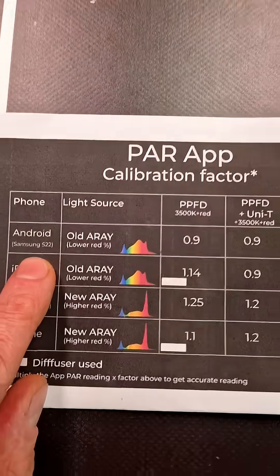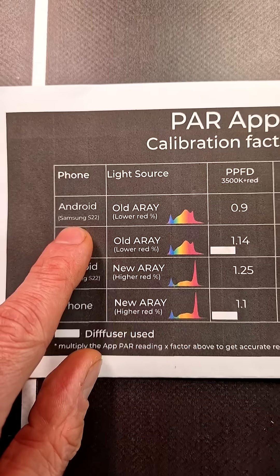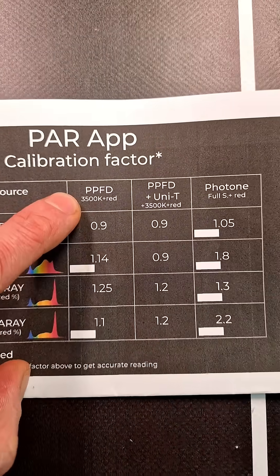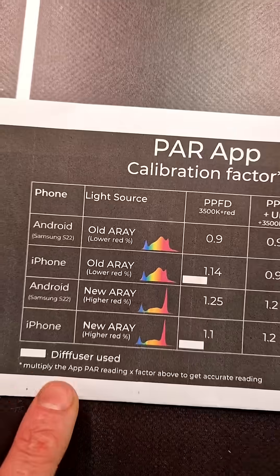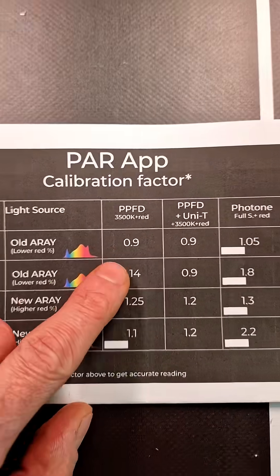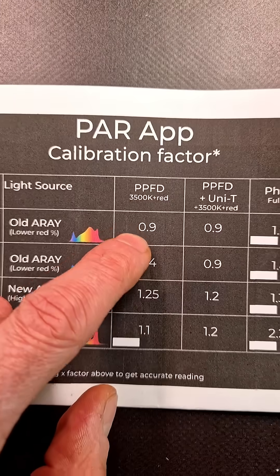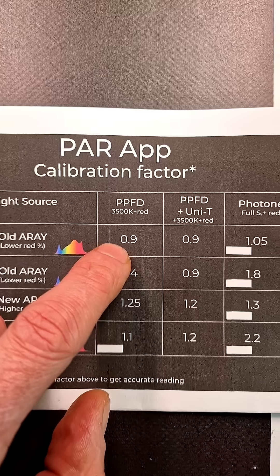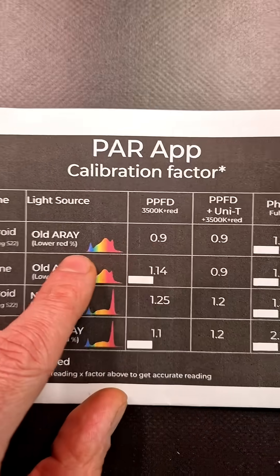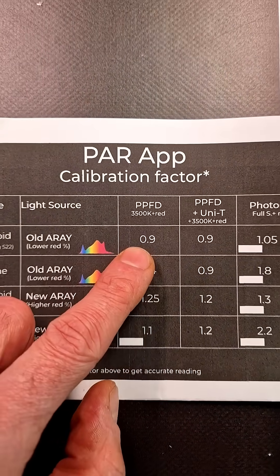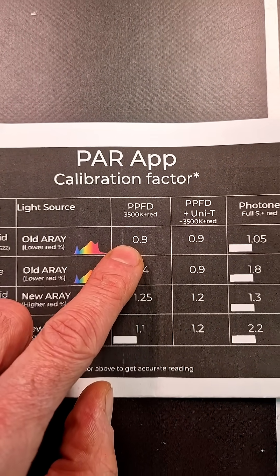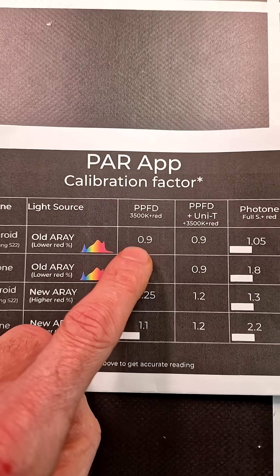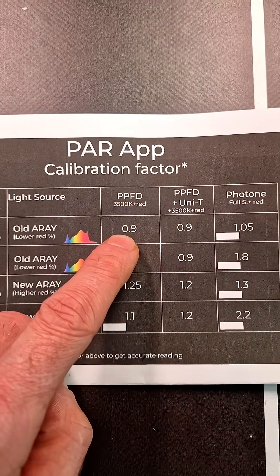Starting here, using an Android with the old array with the PPFD app and no diffuser — the white bar means a diffuser — so with no diffuser at the 3500K plus red setting, it's 0.9. So if you get a reading of 100 micromoles, you multiply it by 0.9 and it'll be 90 micromoles. You can change the factor on the app permanently to suit the readings that you're taking.